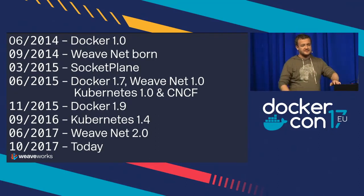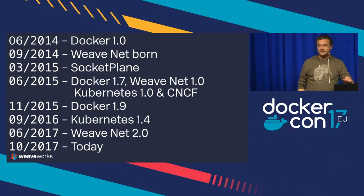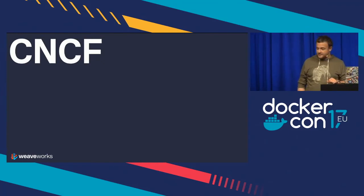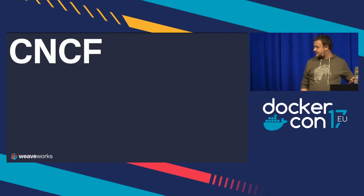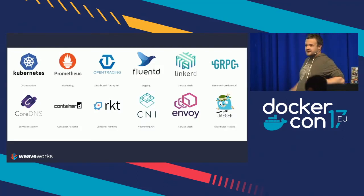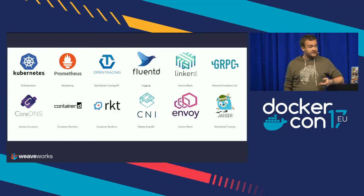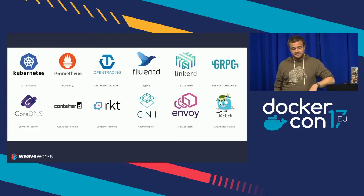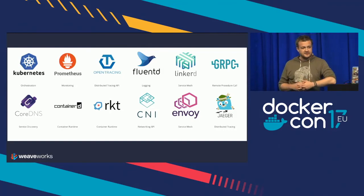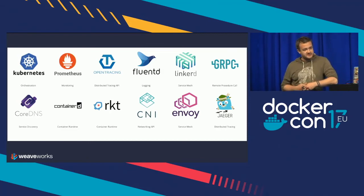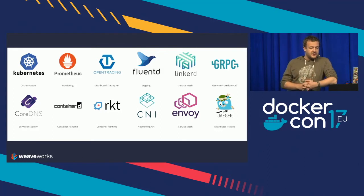Today, we're seeing that networking becomes a commodity and all the good projects live in CNCF. The CNCF hosts great projects: Kubernetes, Prometheus, OpenTracing, FluentD, Linkerd, gRPC, CoreDNS, ContainerD, Rocket, CNI, Envoy, and more recently Jaeger — an implementation of the OpenTracing API. Weaveworks and Docker would like to propose LibNetwork and WeaveNet to the CNCF as a project where we'd be able to collaborate on networking under the Cloud Native Computing Foundation.